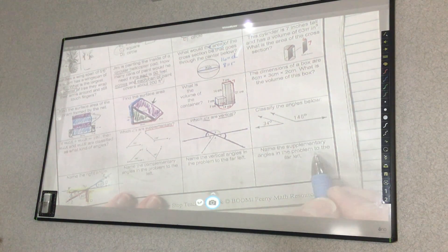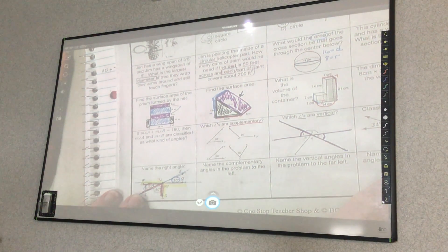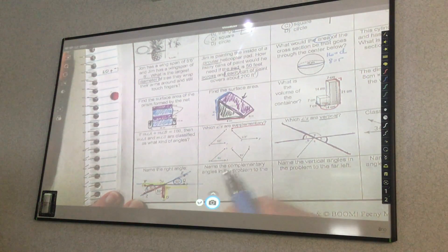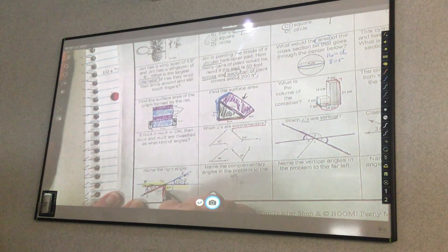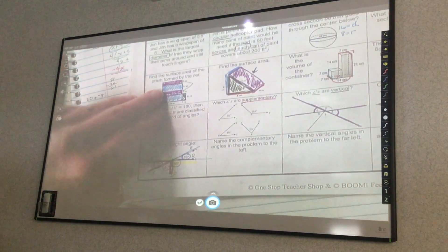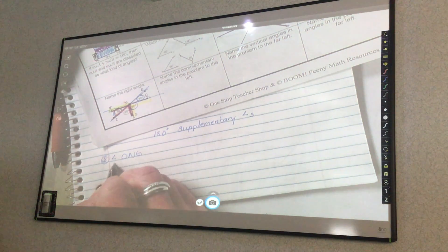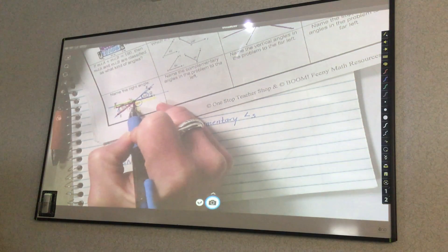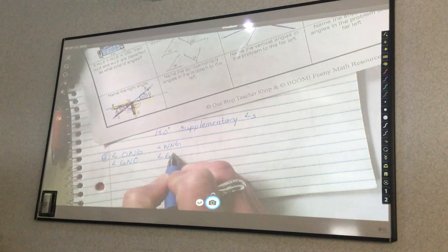Name the supplementary angles on the problem to the far left. So I have to come over here and find angles that are going to add up to 180. And it can only be two angles. So how do I get 180? It would be 90, right? Plus 90. So it would be angle O, N, G. So that's a 90. Angle O, N, G. Or you can say it's angle G, N, O. And then you have to go W, N, G for the other 90 degrees. So angle W, N, G. Or angle G, N, O.